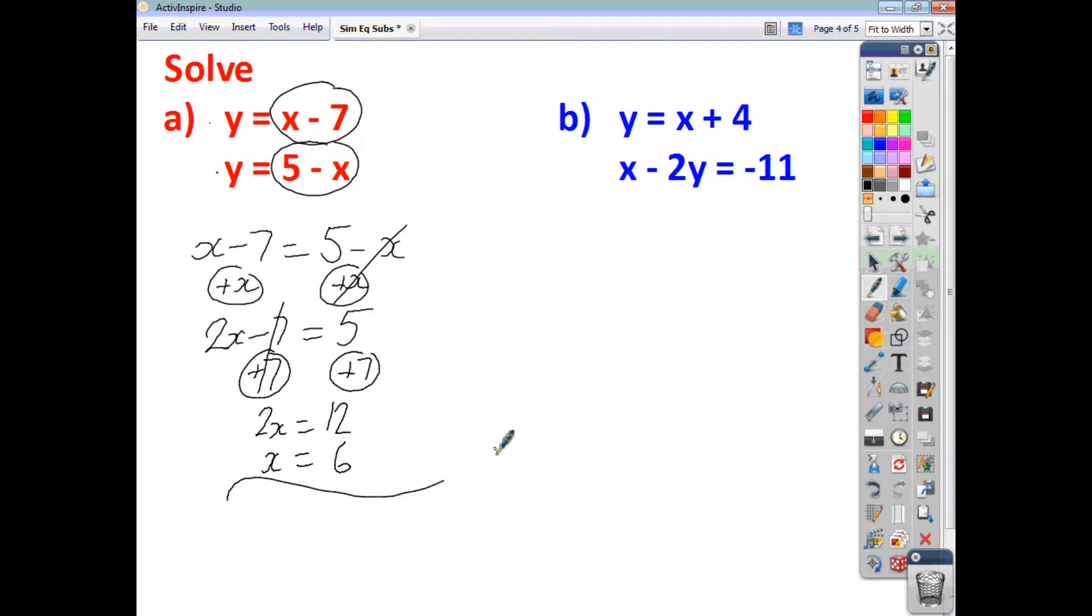Now, if you know that x is 6, then you can just take any of the two equations, it doesn't matter which one, and we say y equals, let's go with the first one, x minus 7, so it becomes 6 minus 7, because you know x is 6, so that gives you a value for y of negative 1. So x is 6, y is negative 1. So the point at which these two equations would cross would be 6, negative 1.